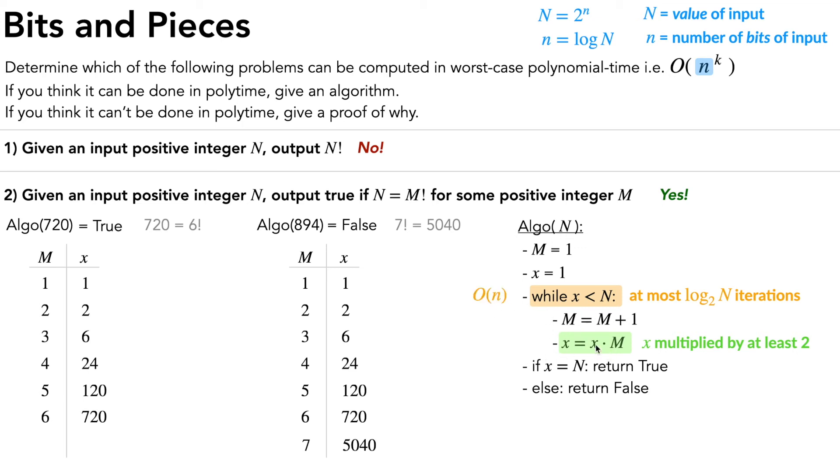And the work done inside of the loop, incrementing M and doing this multiplication, can all be done within O of little n squared time. So overall, this algorithm is just O of little n cubed, which is polytime, and we're all set.